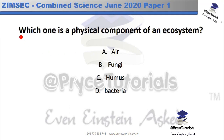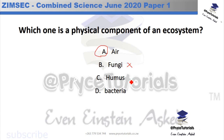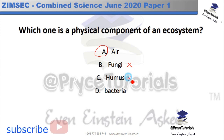The question asks which one is a physical component of an ecosystem. Air is the correct answer — it is a physical component. Fungi is actually a biological component, and the same applies to humus and bacteria.